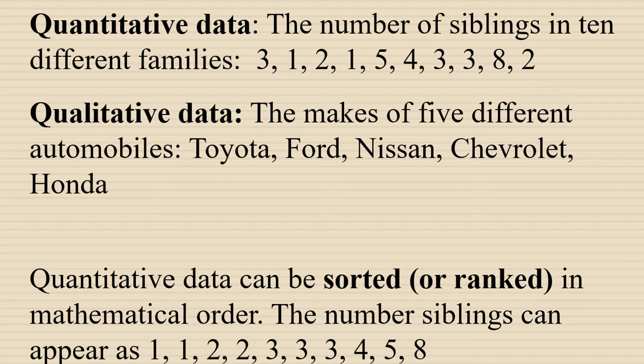For example, some quantitative data might be the number of siblings in 10 different families: 3, 1, 2, 1, 5, 4, 3, 3, 8, and 2. Whereas qualitative data might refer to the makes of five different automobiles: Toyota, Ford, Nissan, Chevrolet, and Honda. One of the advantages of quantitative data is that it can be sorted or ranked in mathematical or numerical order.